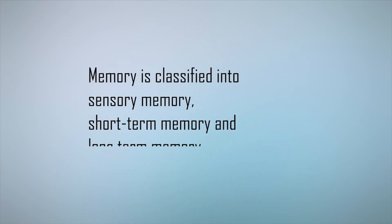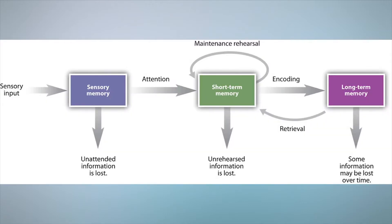Memory is classified into sensory memory, short-term memory and long-term memory. Sensory memory corresponds approximately to the initial 200 to 250 milliseconds after an item is perceived. The ability to look at an item and remember what it looks like with just a second of observation is an example of sensory memory.